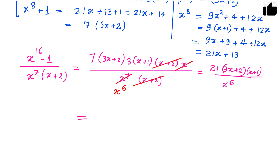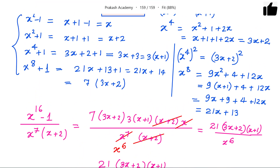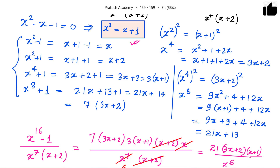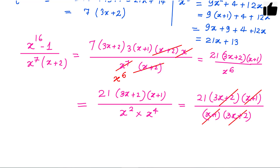After simplification we have 21 times 3x plus 2 times x plus 1, divided by x to the power 6. Now x to the power 6 equals x squared times x to the power 4, which equals x plus 1 times 3x plus 2. So the denominator is x plus 1 times 3x plus 2. These cancel with the numerator, and the final answer for this problem is 21.